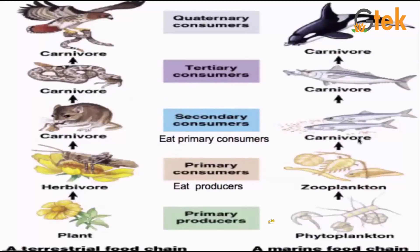And let us see about the food chain of marine and terrestrial. Here you can see the marine food chain. This is phytoplankton — it is the producer for marine. And another one is zooplankton, which gets energy from the phytoplankton. And the carnivore, which is the primary and secondary consumer, gets energy by eating the primary consumer.